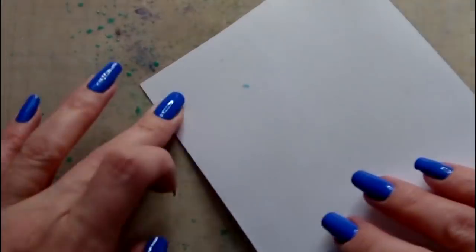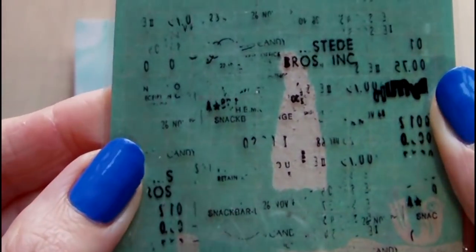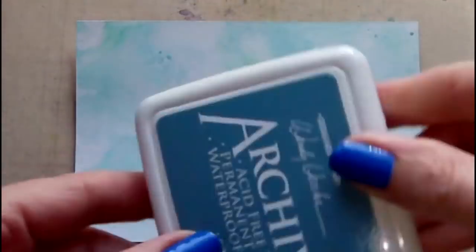Next I'm taking a stamp by Prima. This is a small background stamp and I'm stamping it onto my piece using archival ink in the color cornflower.